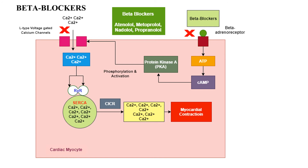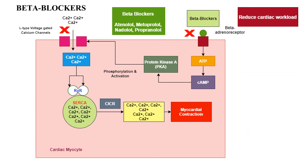Beta blockers work by blocking catecholamines at beta adrenergic receptors. Normally, catecholamines stimulate formation of cyclic AMP and protein kinase A, leading to opening of L-type voltage-gated calcium channels and myocardial contraction. Beta blockers prevent this cascade. Examples include atenolol, metoprolol, nadolol, propranolol, and all the '-lols'.